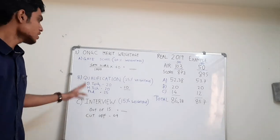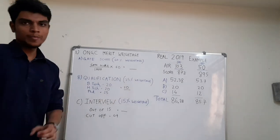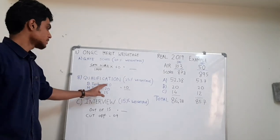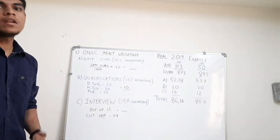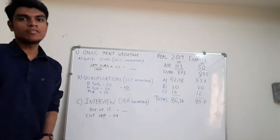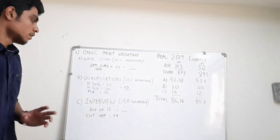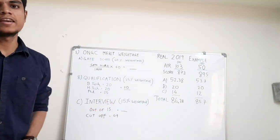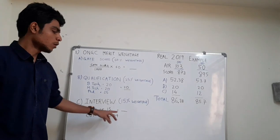Second qualification marks is given 25% weightage and for BTech, it is given 20 marks, MTech or PhD candidates are given 25 marks. So for most of us, it will be 20 marks. Third thing, interview marks are given 15% weightage and they are awarded out of 15.